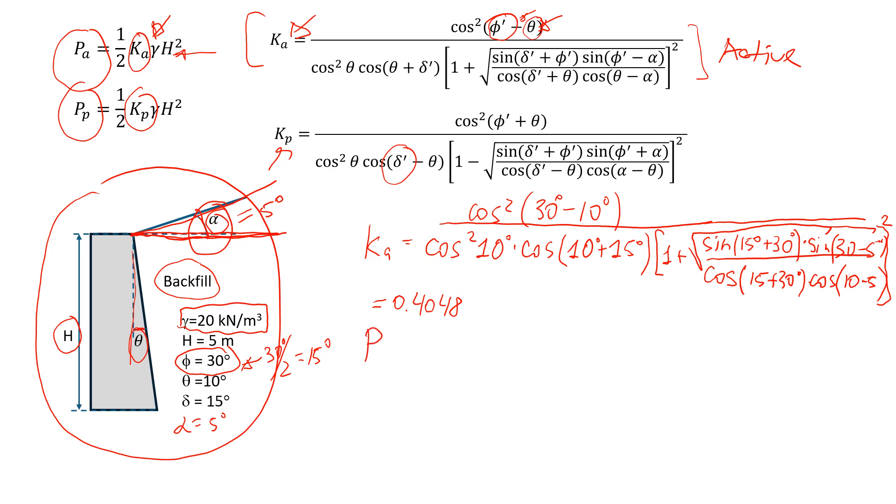Now let's estimate the active pressure. So it will be half times the coefficient of active pressure, which is 0.4048 times the unit weight of soil 20, and the height of the wall 5, in the power of 2. According to my calculations, it's going to give us a value of 101.2 kPa. So that will be active pressure acting on this retaining wall.